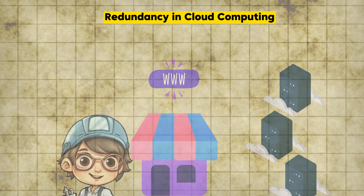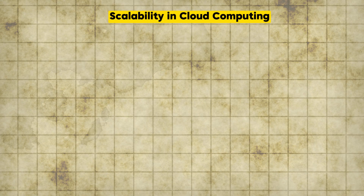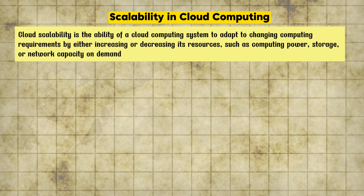Now let's move on to question 237, which asks: which cloud architecture design principle focuses on efficiently handling increasing workloads by adding or removing resources in a linear manner? The options are: A) Scalability, B) High Availability, C) Elasticity, and D) Resilience. The correct answer is option A, Scalability.